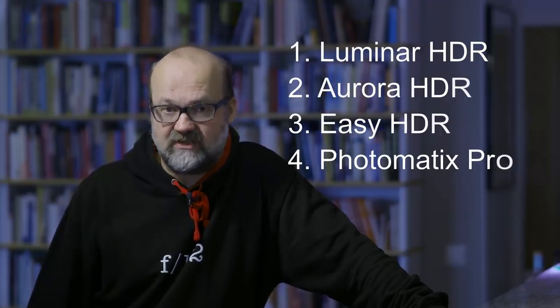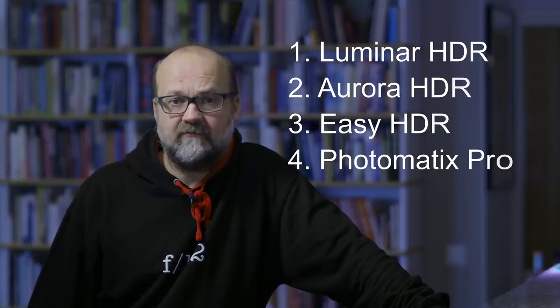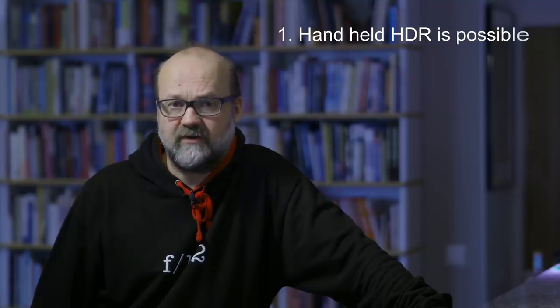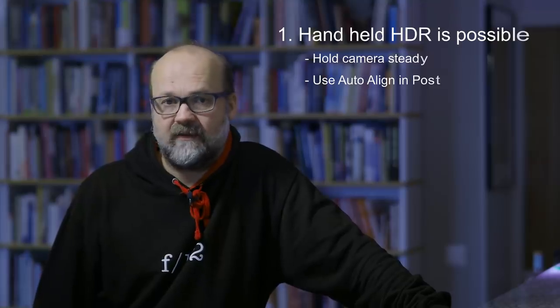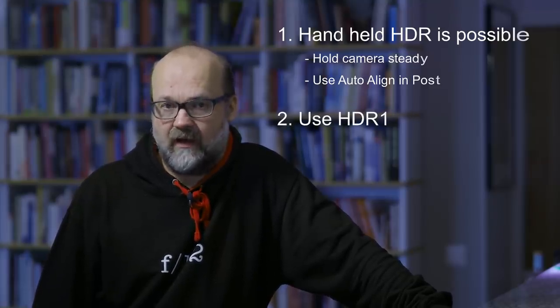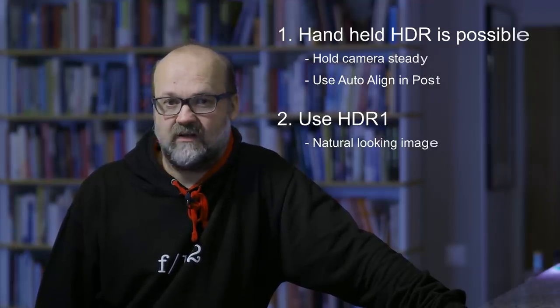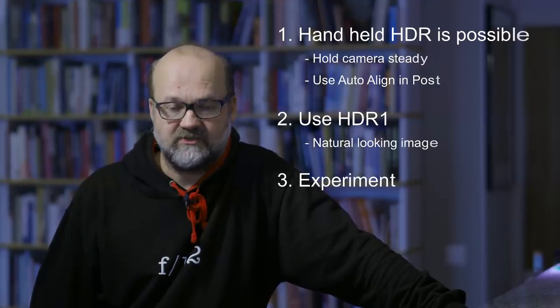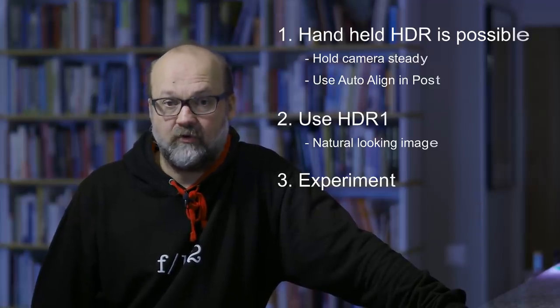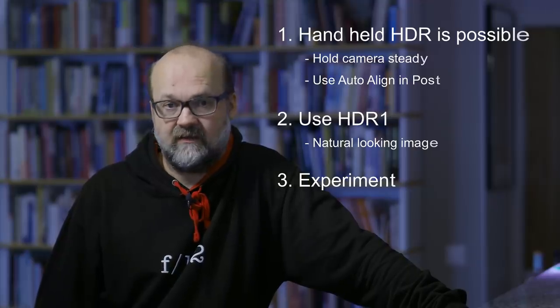As you saw, it's quite easy to make HDR images in post with Lightroom — it's automated and makes very good results. If you want to tweak more, you may need dedicated HDR software. Three things to remember: first, handheld HDR is possible — hold the camera as steady as possible and use Auto Align in post. Second, if you don't want to do anything in post, use HDR 1 for a natural result. Third, always experiment with the other options where the camera makes individual images — try seven images at 2.0 EV and remember you can also record these in RAW.